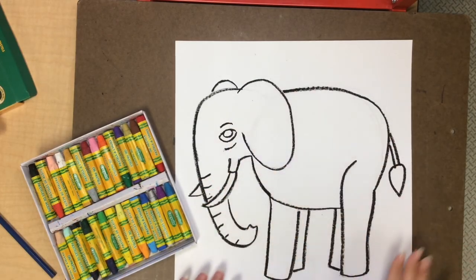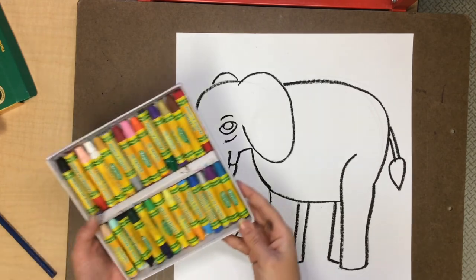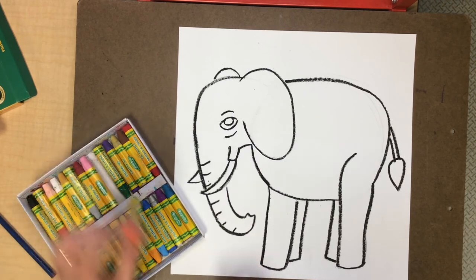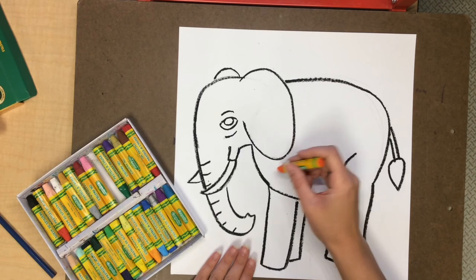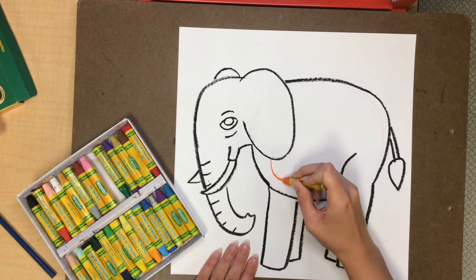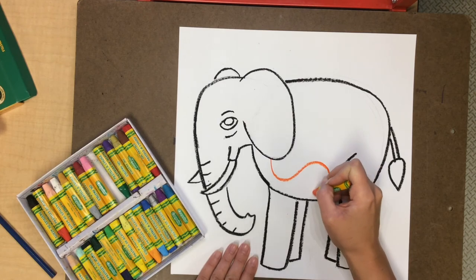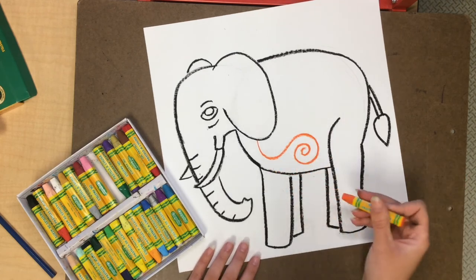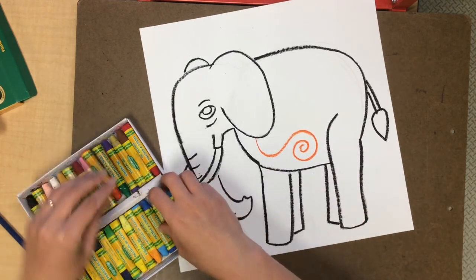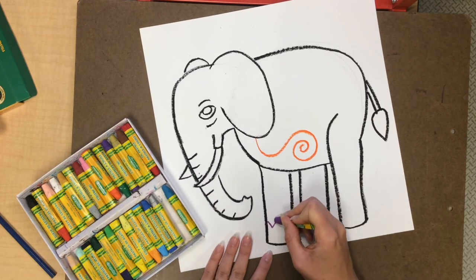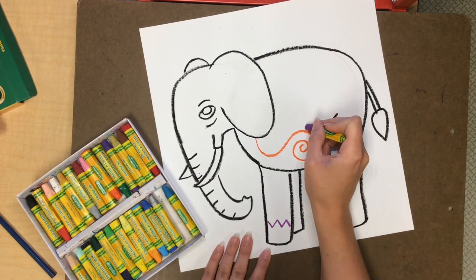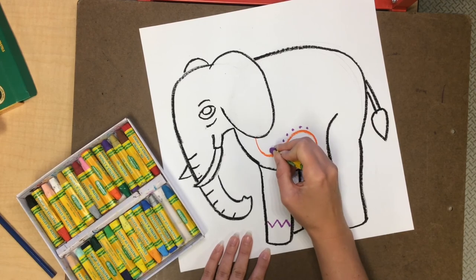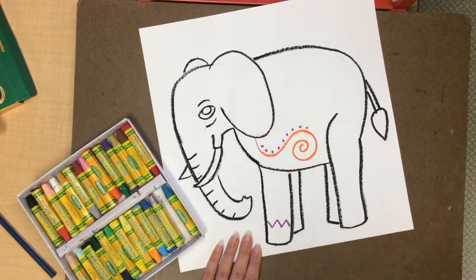Now my elephant is all outlined and he stands out really well. Now I can use colors to make this elephant look like the painted elephants of India. You can choose whatever colors you want. But just be careful as you draw your lines to decorate your elephant that you don't smudge any of your other lines. So you can do curved lines. You can do zigzag lines. Dotted lines. The more different kinds of lines you add to your elephant, the more beautiful it's going to look.